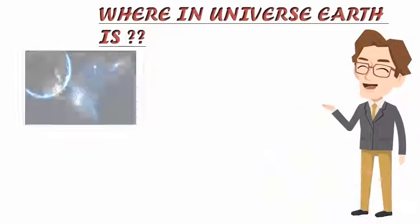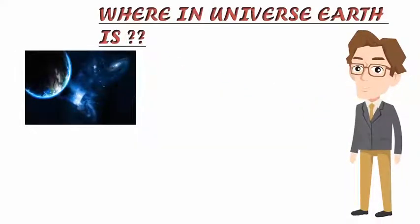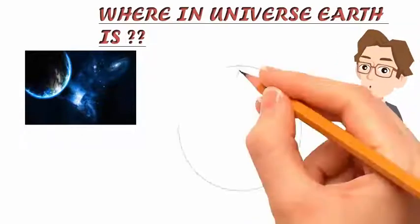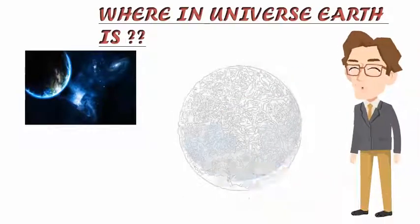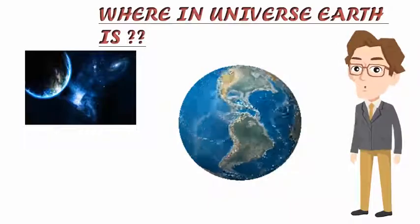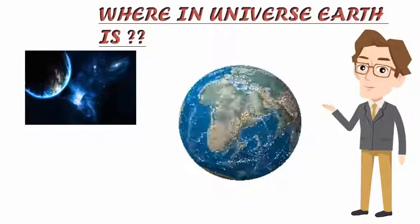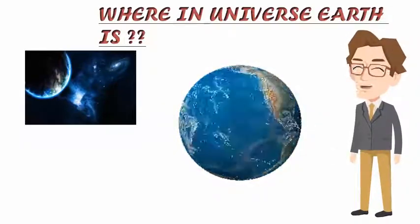The Milky Way galaxy is a barred spiral galaxy with a diameter of about 100,000 light years and containing about 200 billion stars. Our solar system is located towards the edge of one of the Milky Way's outer spiral arms, known as the Orion Arm or Local Spur.